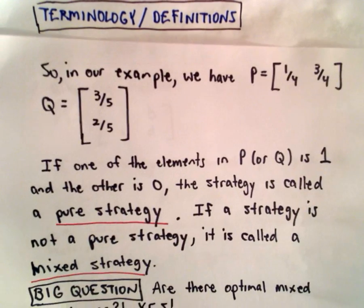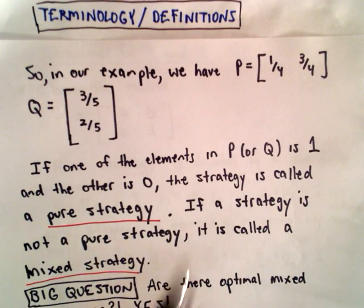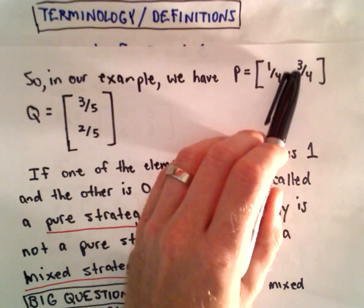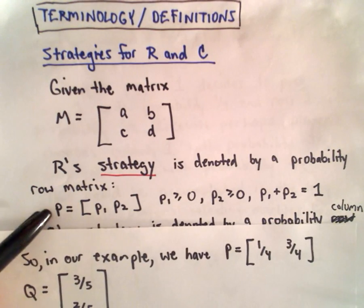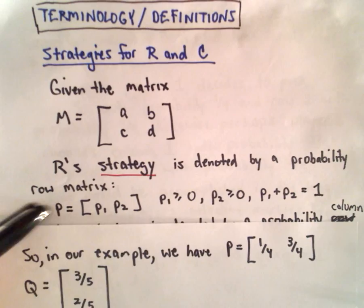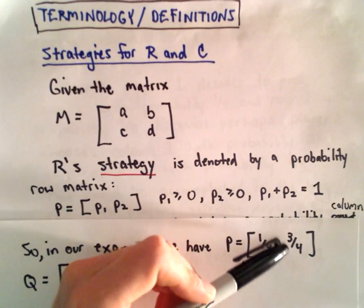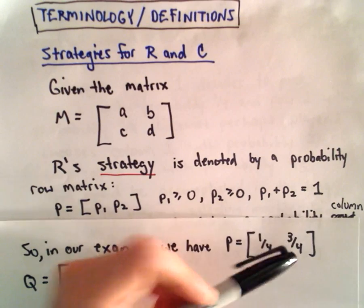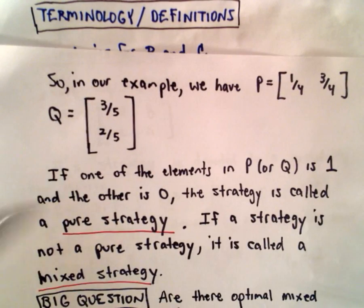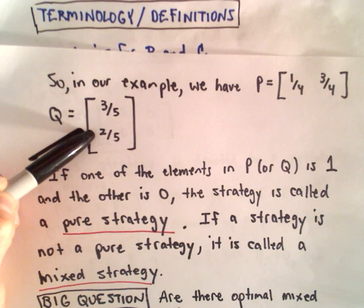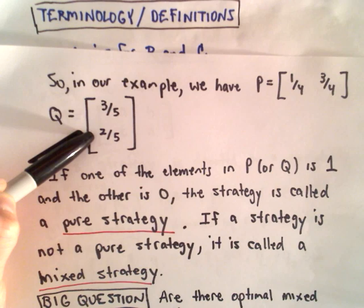So what we said just a second ago in our example, we would have, for us, that P equals one-fourth and three-fourths. That's the probability associated with player R, right? There was a one-fourth probability that they would pick the first row, three-fourths probability they would choose the second row. The same thing with Q. There's a three-fifths probability they would choose the first column, two-fifths probability that they would choose the second column.